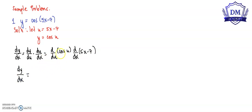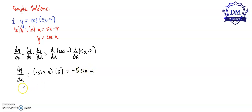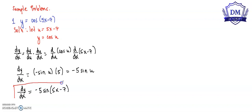What is the derivative of cosine u? That is negative sine u. Multiply it by the derivative of 5x minus 7, that is 5. Negative sine u multiplied by 5 is negative 5 sine u. So our derivative dy over dx is equal to negative 5 sine of 5x minus 7. This is our derivative.